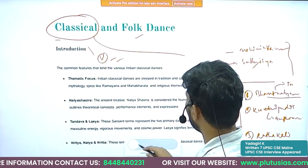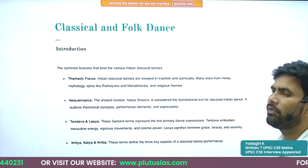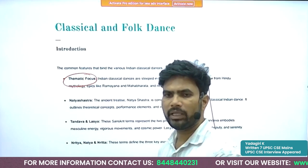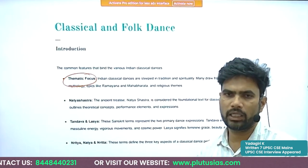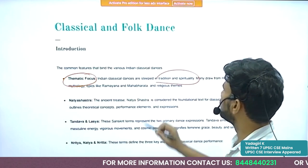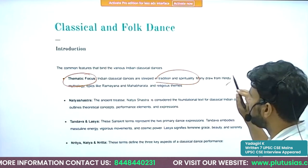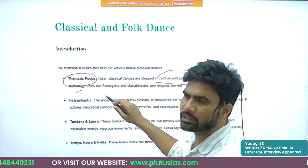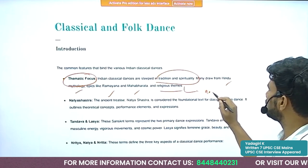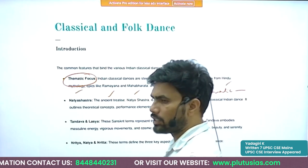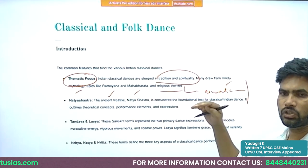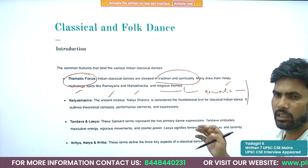Before discussing each classical dance in detail, we will see some common features. The theme is a major aspect of a classical dance — through the dance, a story is told. Themes are steeped in tradition and spirituality, and many have been drawn from Hindu mythology, epics like Ramayana and Mahabharata. In Kathak you also see romantic themes like Radha and Krishna.